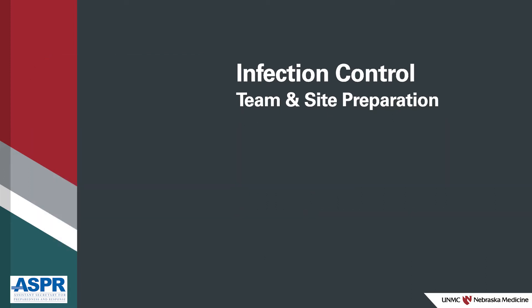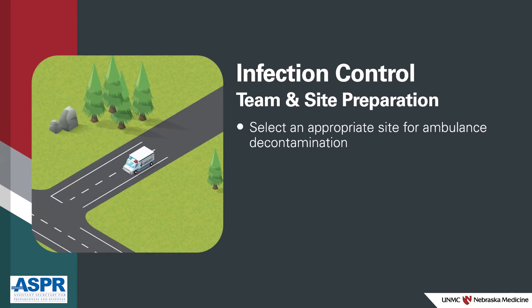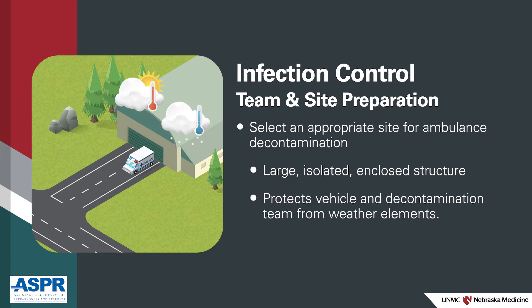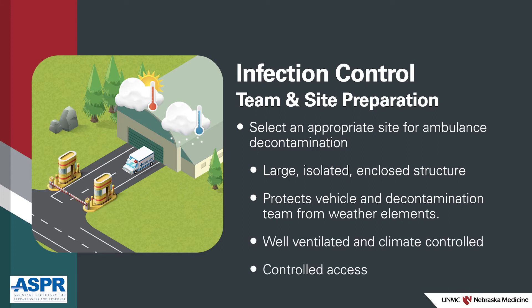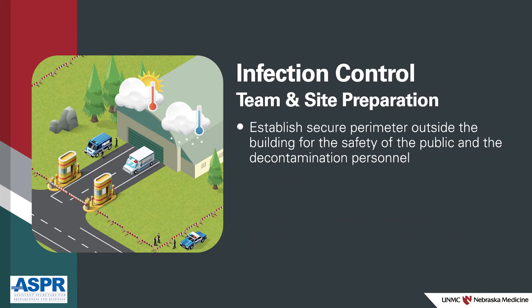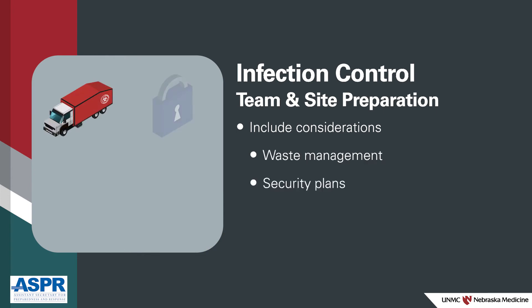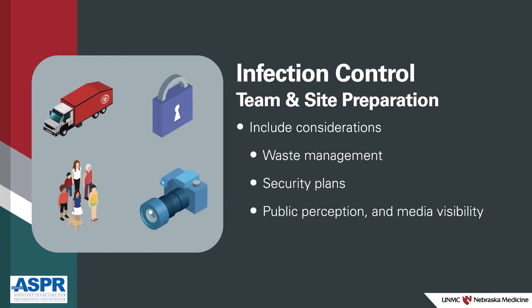There are several steps to set up your decontamination site. Preferably, the ambulance decontamination site will be a large, isolated, enclosed structure capable of protecting the vehicle and the decontamination team from weather elements. It should be well ventilated, climate controlled and have controlled access. Establish a secure perimeter outside the building for the safety of the public and the decontamination personnel. Include considerations for waste management, security plans, public perception and media visibility when selecting the decontamination site.